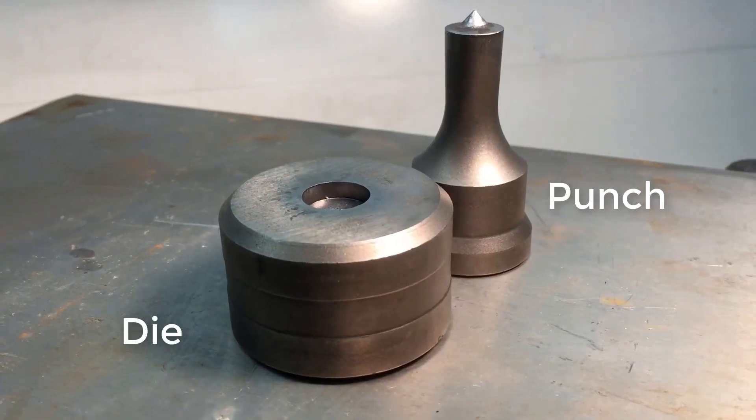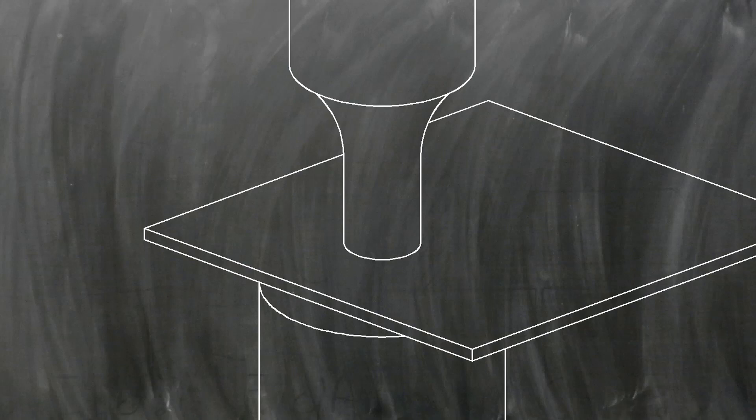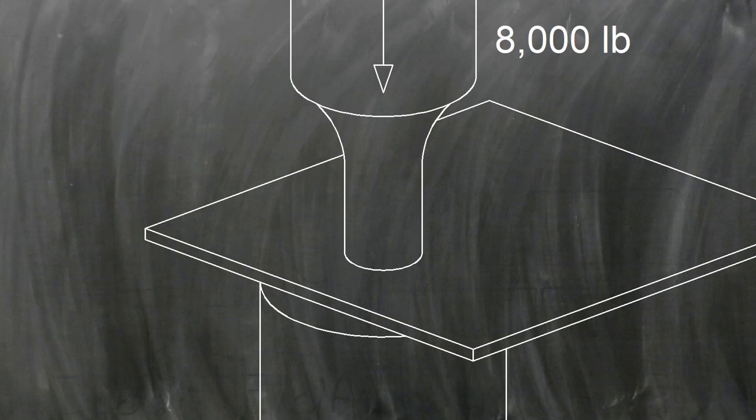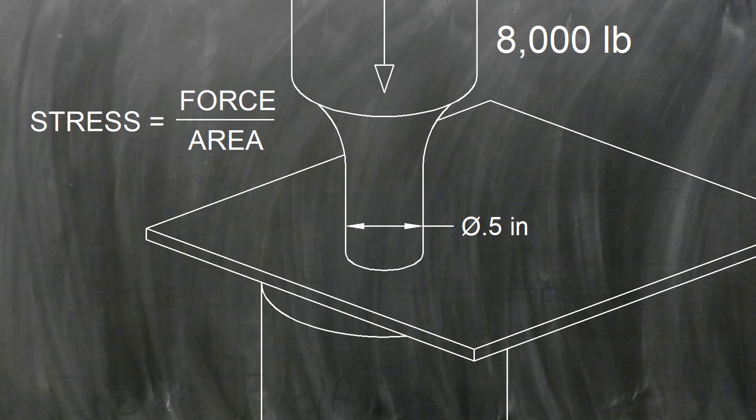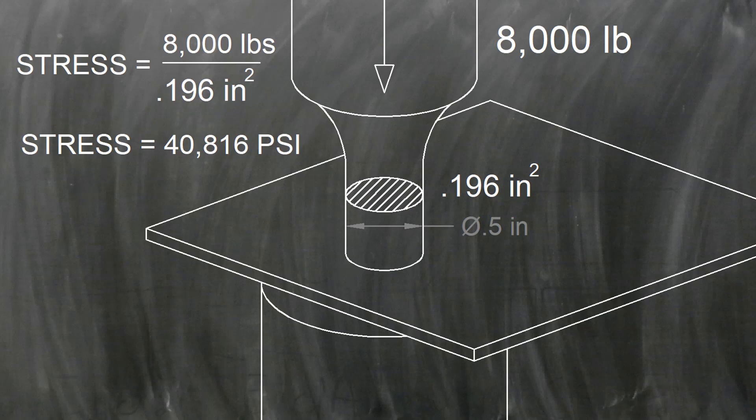Let's take a look at this punch. If we load this half inch diameter punch with 8,000 pounds, how much stress is being developed in the punch? Again, we'll use the formula force per unit area to calculate the stress. The stress in the punch is about 8,000 pounds divided by 0.196 square inches. 8,000 divided by 0.196 is a little more than 40,800 pounds per square inch. The compressive stress is 40,800 psi.